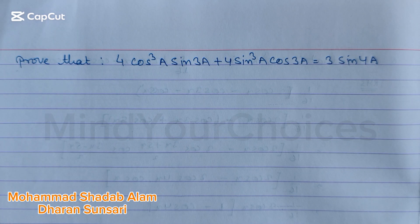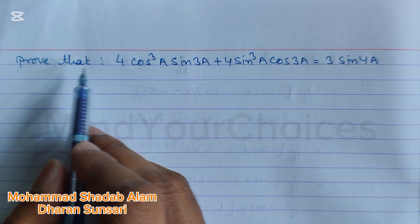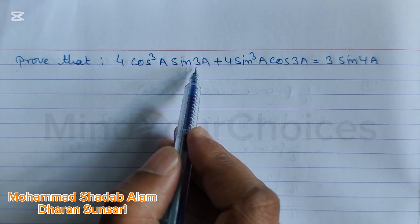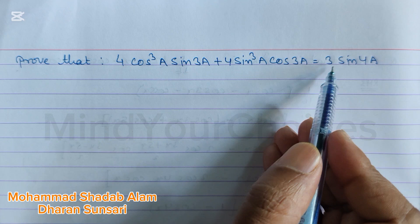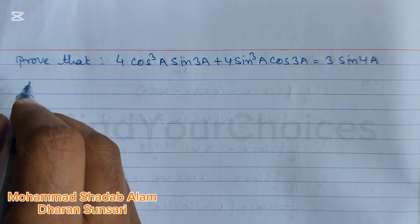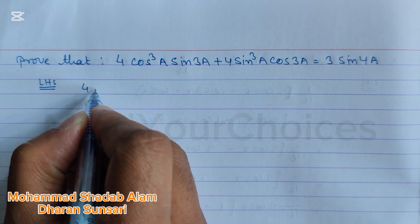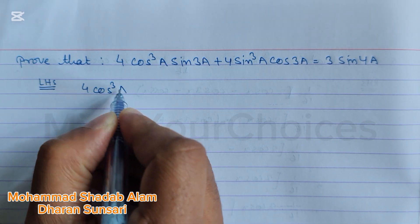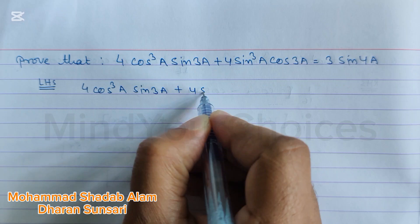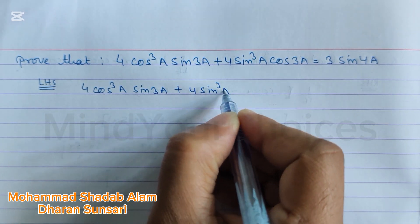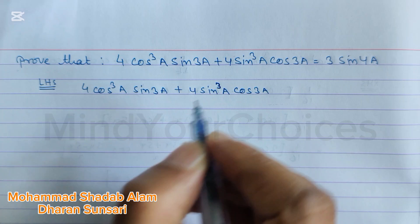Everyone, this question is very popular and has already repeated in exams. So, prove that 4cos³a·sin3a + 4sin³a·cos3a is equal to 3sin4a. Let's take the LHS. In LHS we have 4cos³a·sin3a plus 4sin³a·cos3a.